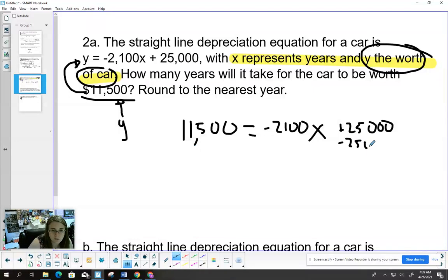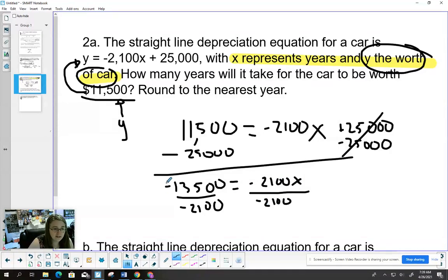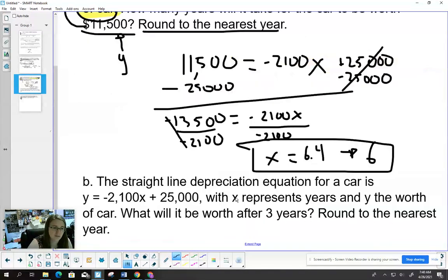Solving for X, I'm going to subtract the $25,000. $11,500 minus $25,000 equals negative $13,500. Then this is multiplication: negative 2,100 times X. So I want to undo that multiplication by dividing both sides by negative 2,100. You should have gotten 6.4. I say to round to the nearest year, that could round down to 6. Either of those answers are fine.